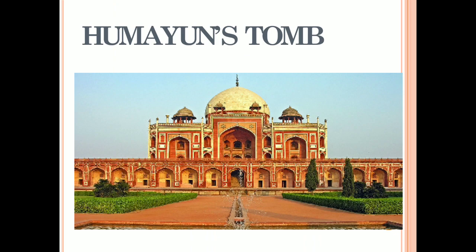The next monument is Humayun's Tomb. Humayun was a Mughal king and he is the father of the famous Emperor Akbar. After the death of Humayun, his wife Haji Begum started the construction of this tomb in the 16th century in Delhi. A Persian architect was specially invited from Afghanistan to design the structure.